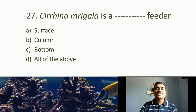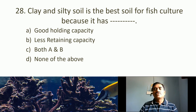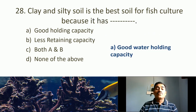Twenty-seventh MCQ: Cirrhinus mrigala is a what feeder? Cirrhinus mrigala is the scientific name of Mrigal and it is a bottom feeder. The right answer is bottom feeder. Twenty-eighth MCQ: Clay and silty soil is the best soil for fish culture because it has good water holding capacity. The correct answer is good water holding capacity.